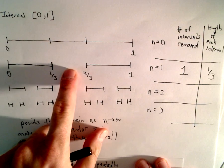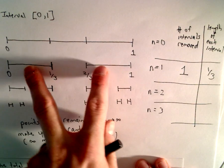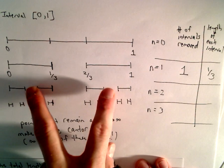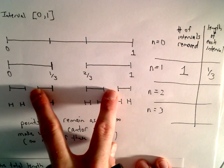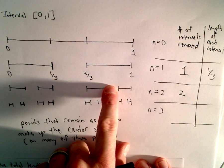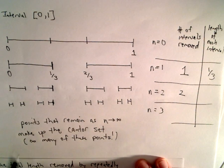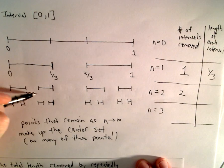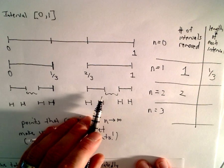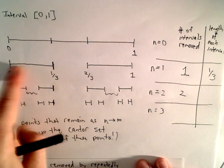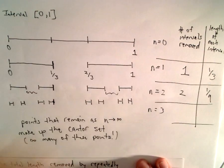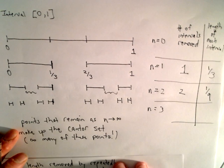At the next step, n equals two, we've got two intervals and from each one we remove a middle third, so we've removed two intervals. The length of each one: the original length was one-third, and we've removed a third of a third, so we've removed two intervals of length one-ninth.